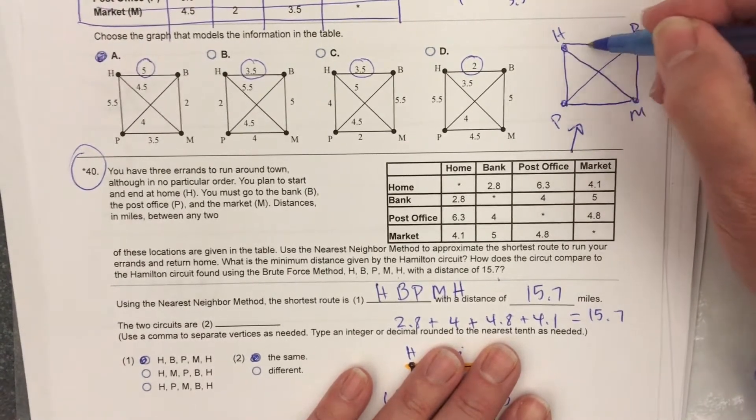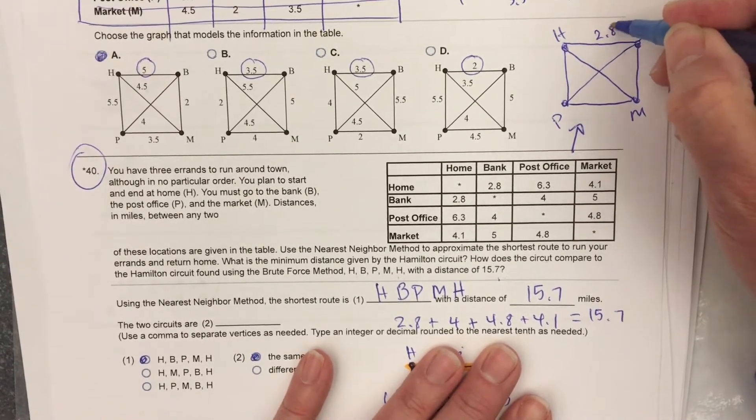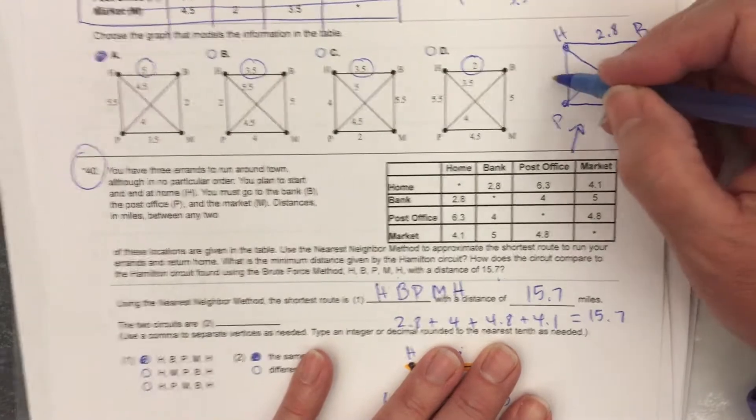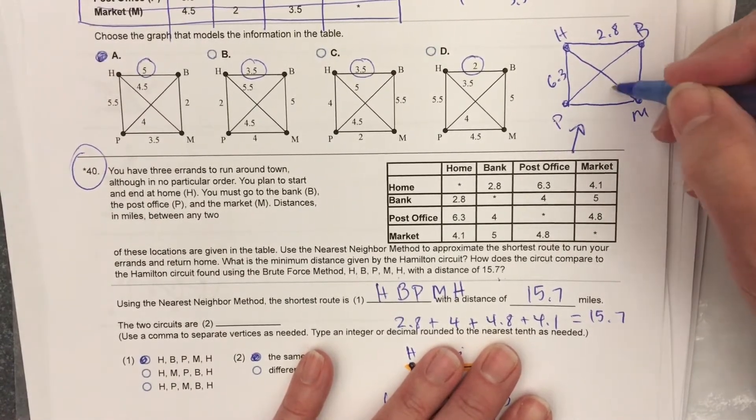Home to the bank is 2.8. Home to the post office is 6.3. Home to the market is 4.1.